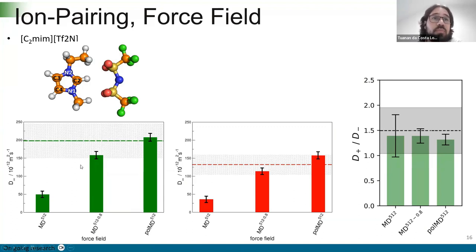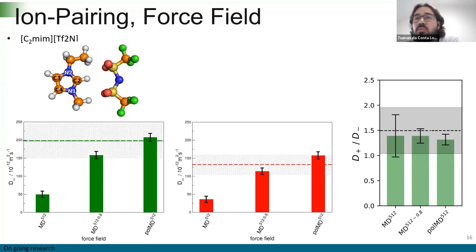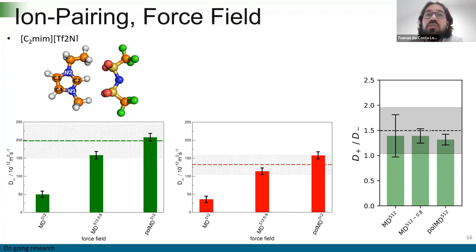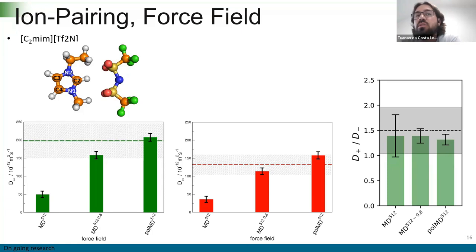The unit charge result is far from the experimental data (the dashed line). The scaled charge is close enough to the experimental value — in my personal opinion. The polarizable force field gives a really good description of the experimental data. But when we look at the ratio of the diffusion coefficient of cation to anion across all three systems, we see a very similar behavior — all systems are really close to each other. This means that even a simple force field with unit charges can give a good qualitative description of the physics, even if not quantitatively accurate.